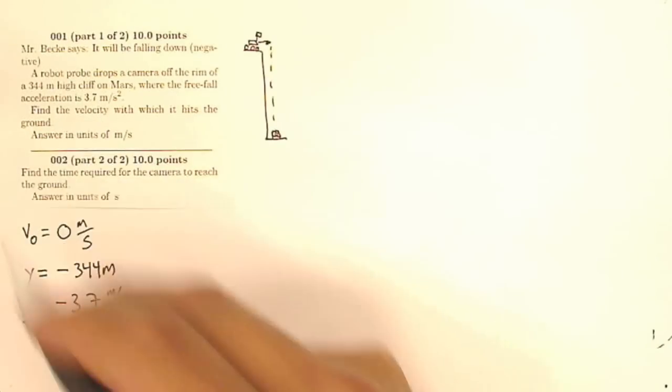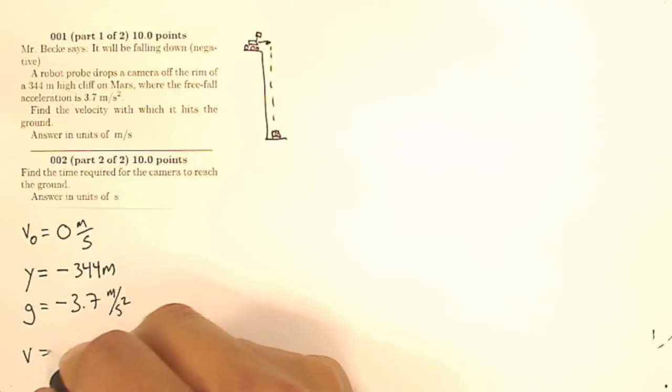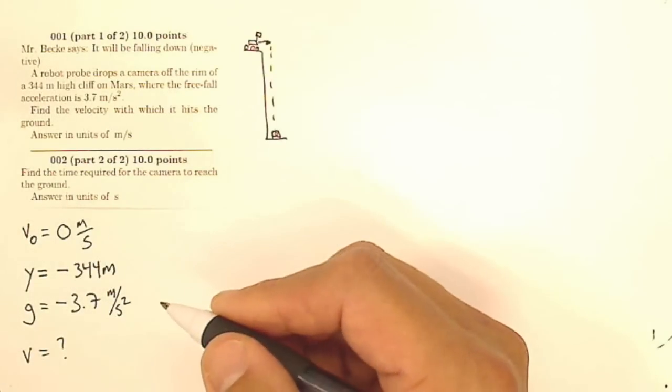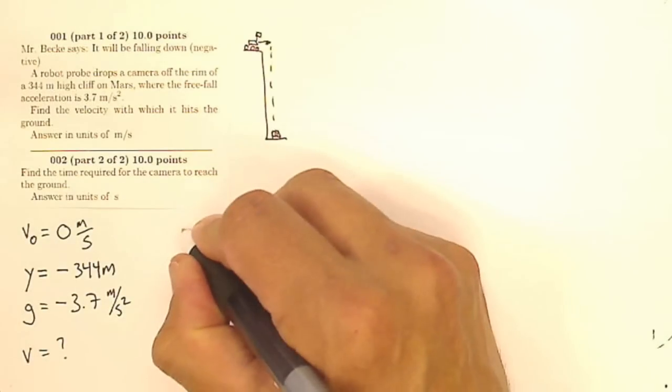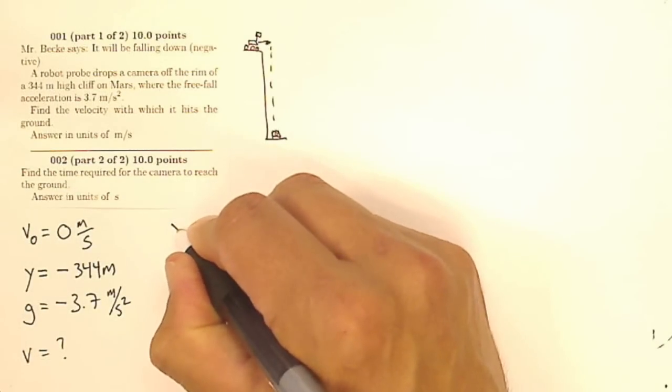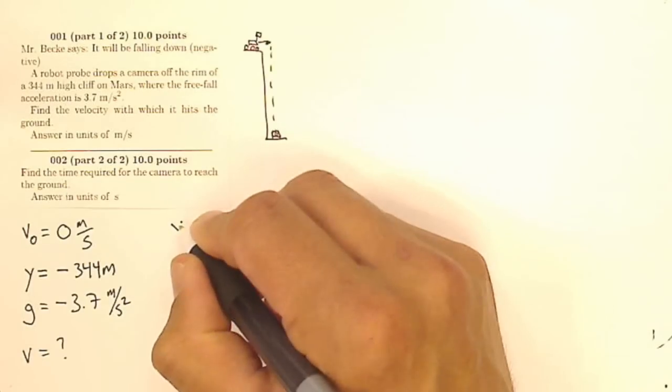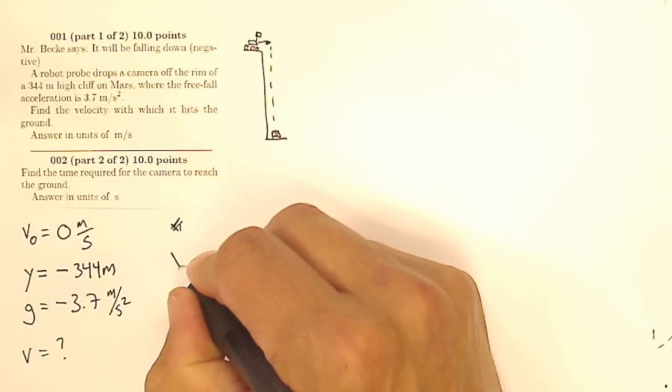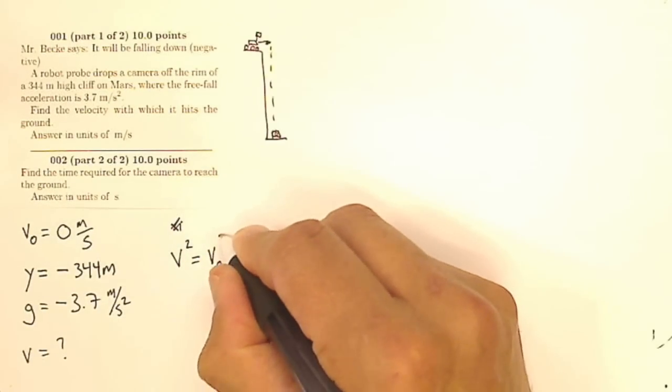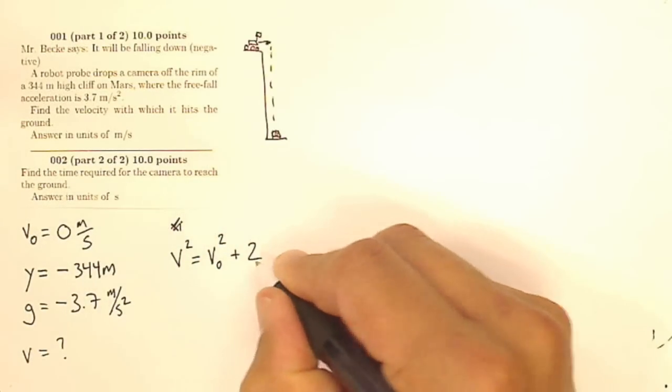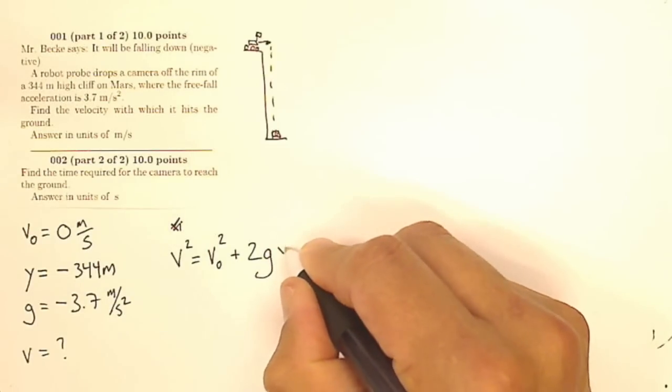It says find the velocity with which it hits the ground, so I'm looking for a final velocity. Now do I have an equation in the Y world that talks about initial velocity, displacement, acceleration, and final velocity, but does not have time? Sure I do. Without time, the one without time tells me that my final velocity squared equals my initial velocity squared plus twice my acceleration times my displacement.